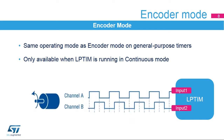The low-power timer features an encoder mode function that can interface with incremental quadrature encoder sensors using the peripheral's input 1 and input 2 inputs. Both inputs feature glitch-filtering circuitry. The encoder function is similar to the one embedded in the general-purpose timers. In order to use the encoder mode function, the low-power timer must be running in continuous mode. Only low-power timers 1 and 2 embed the encoder mode function.